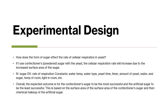My research question was: how does the form of sugar affect the rate of cellular respiration in yeast? My hypothesis was that if I use confectioners powdered sugar with the yeast, the cellular respiration would increase due to the increased surface area of the sugar. Since the powdered sugar is so fine, there's more surface area for the yeast to react with in a shorter amount of time. The independent variable was sugar type and the dependent variable was the rate of respiration.